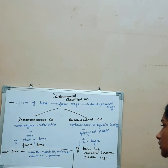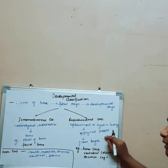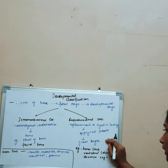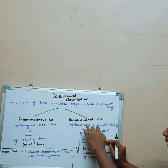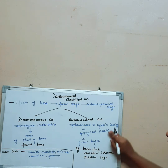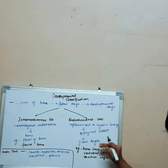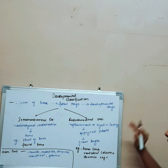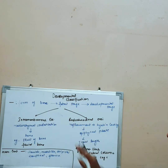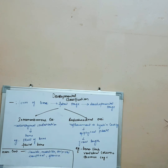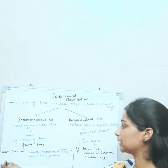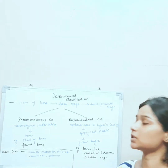In endochondral ossification, there is replacement of the hyaline cartilage at the epiphyseal plate. There is cartilaginous ossification, and the hyaline cartilage is replaced at the epiphyseal plate, then it grows in length. Examples of endochondral ossification are the bones of the limbs, the vertebral column, and the thoracic cage.